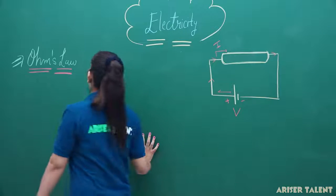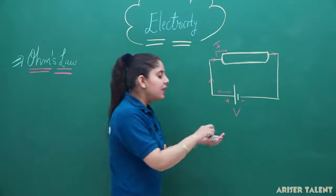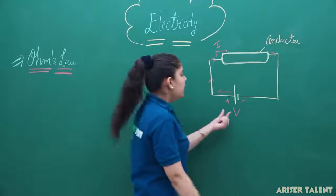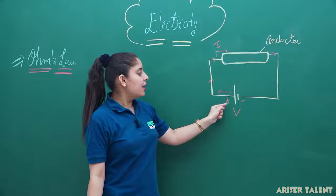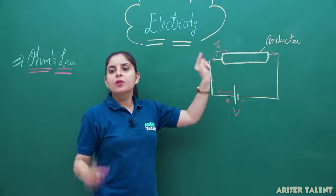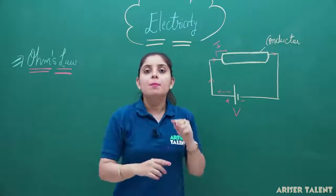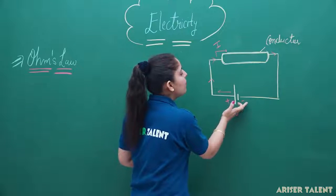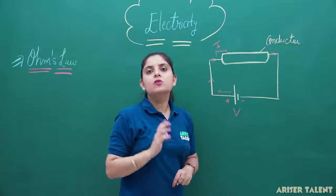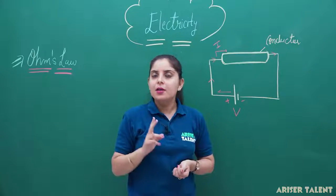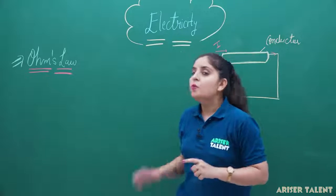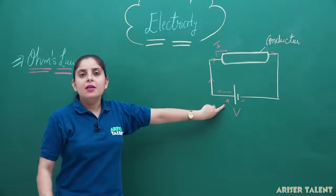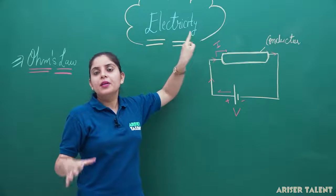Ohm's law states that — suppose we have taken any conductor, it may be a metallic conductor or some other conductor. If I am applying a voltage across its ends, you can see that current will start flowing from positive to negative. We know that the direction of current is from positive to negative. But if we talk about electronic current, it is basically the flow of electrons, so its direction will be from negative to positive. The direction of flow of electrons is always opposite to the direction of flow of current.